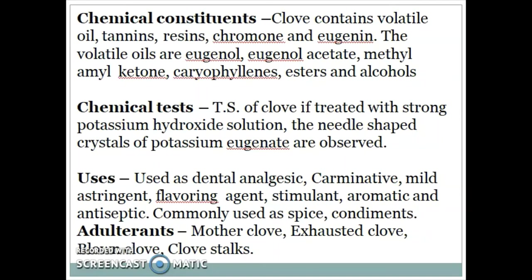Chemical test: when the resinous extract of clove is treated with strong potassium hydroxide solution, needle-shaped crystals of potassium eugenate are observed. Uses: clove is used as a dental analgesic, carminative, mild astringent, flavoring agent, stimulant, aromatic, and antiseptic. It is commonly used as a spice and in condiments. Adulterants are mother clove, exhausted clove, brown clove, and clove stalks. Thank you.